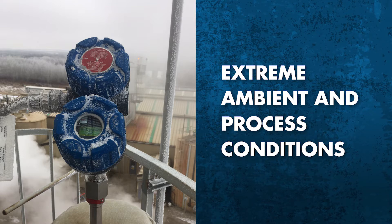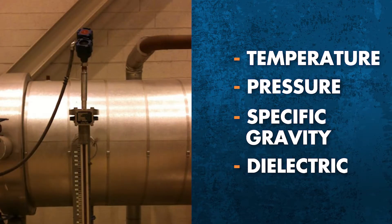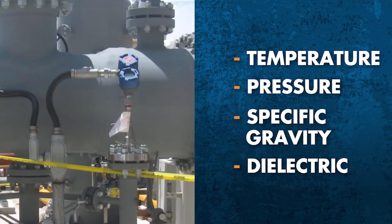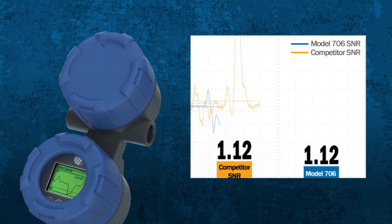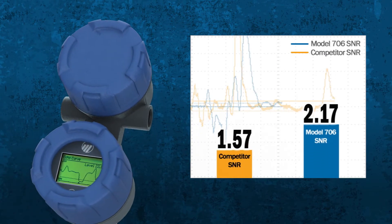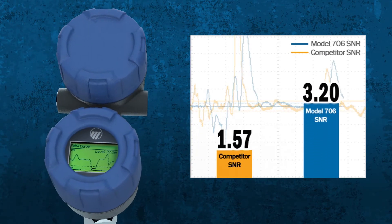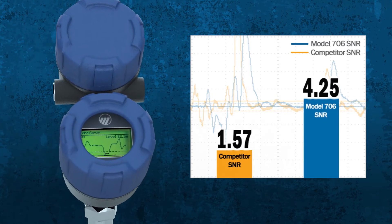That includes temperature, pressure, specific gravity, and dielectric. The superior signal strength results in a signal-to-noise ratio that's almost three times higher than the nearest competitor. Having that robust signal means it can measure tougher applications with fewer lost signals and less downtime.